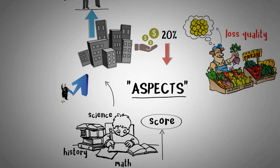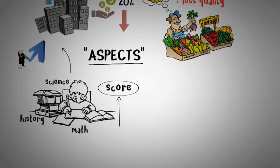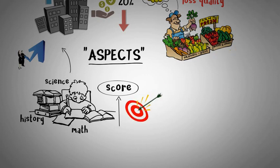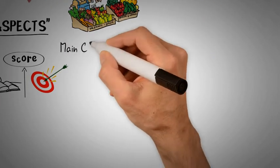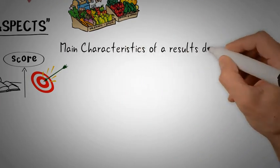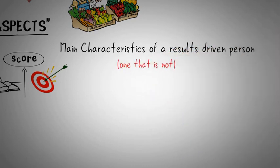Work and studies aren't very different things and you could always apply the same principles to your goals in life. Let us take a look at some of the main characteristics of a result-driven person and one that is not.